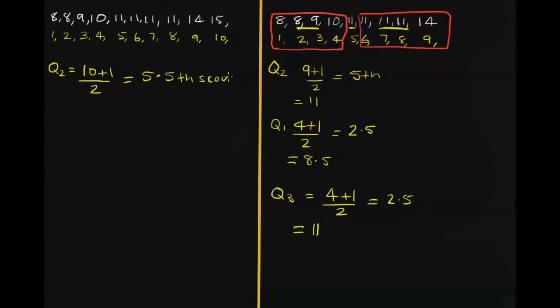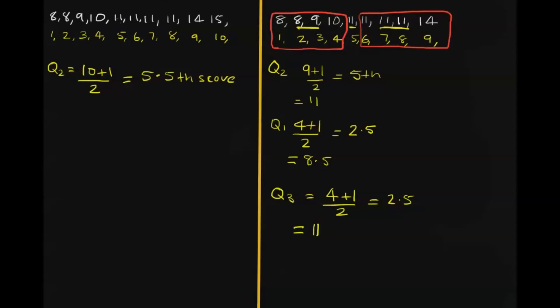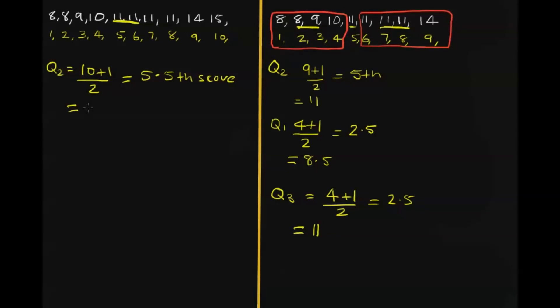That's what we're looking for. So we count 1, 2, 3, 4, 5, 6. So the 5.5 score is going to be the average of these two here. And the average of 11, 11 is just 11.